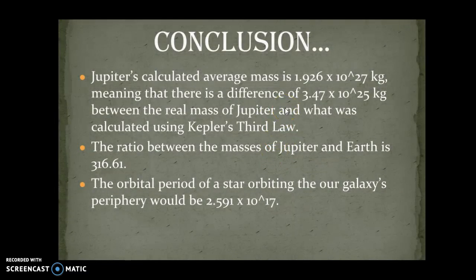So conclusion of this question. Jupiter's calculated average mass is 1.926 times 10 to the 27th kilograms. And then I named the difference, which is 3.47 times 10 to the 25th kilograms, which may seem kind of big but it's not actually big. Because it's such a big number, that's a small difference - at least that's how my teacher explained it. Between the real mass of Jupiter and what was calculated using Kepler's third law, which by the way, he is my favorite and his law is the best. The ratio between the masses of Jupiter and Earth is 316.61, which I already went through. And the orbital period of the star orbiting our galaxy's periphery would be about 2.591 times 10 to the 17th. So I was right, it is 17.